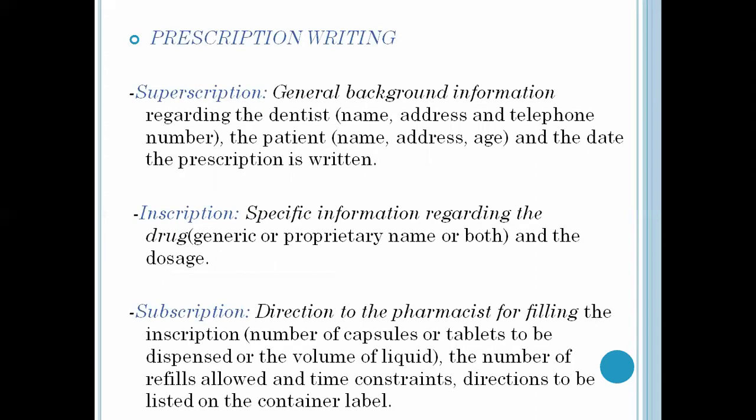Prescription writing consists of the following parts. First is superscription — superscription is the general background information regarding the dentist, that is the name, address and telephone number, and information about the patient that is the name, address, age, and the date when the prescription is written.